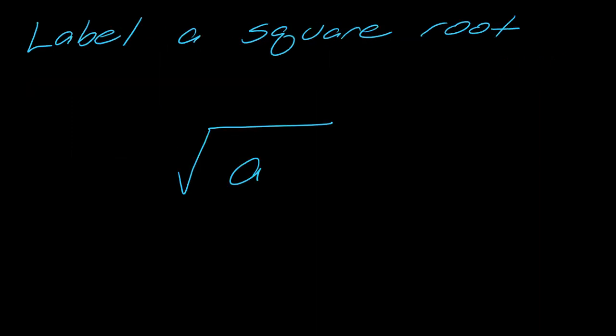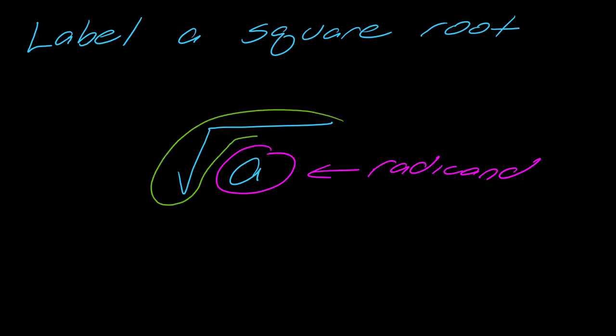This is called the square root symbol. I just want to label a few things. The thing under the square root is what's known as the radicand, while the root symbol itself, just this part, is my square root symbol or my radical symbol.